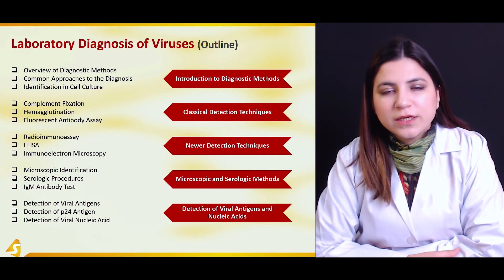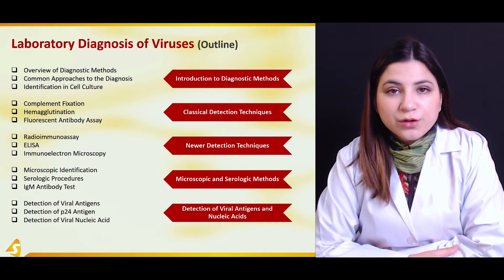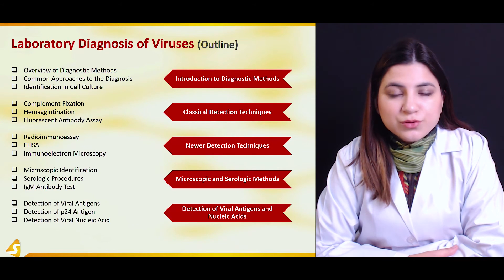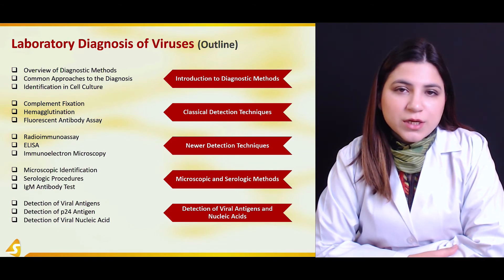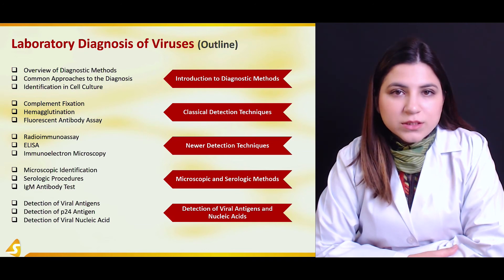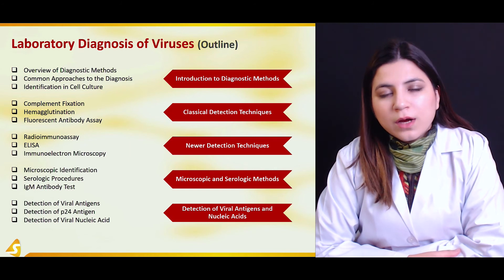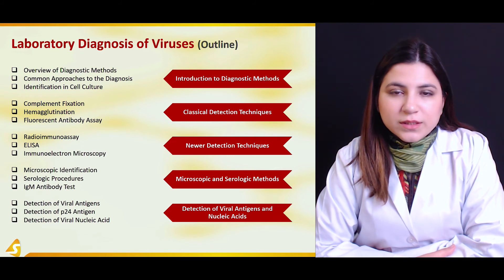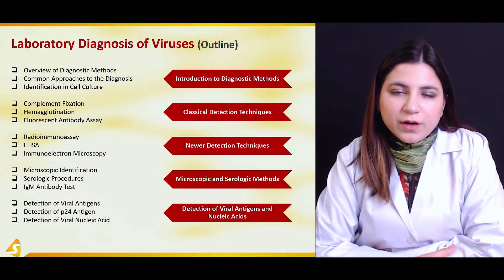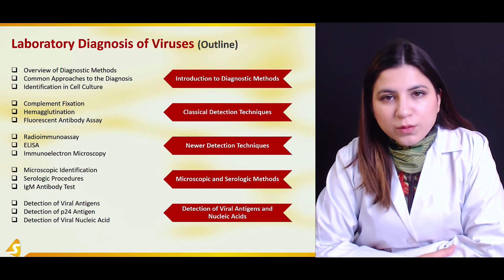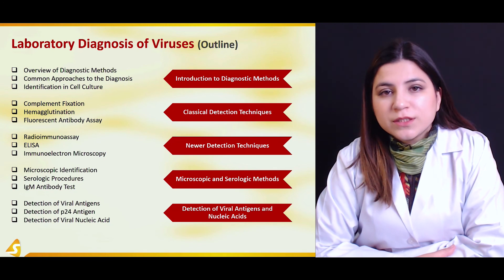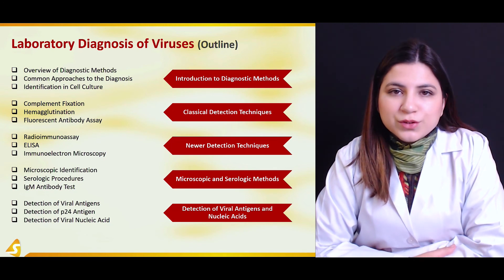Then we'll finally discuss the detection of viral antigens and nucleic acids. There are certain tests developed that are very specific to the type of viral antigen which might be present inside a cell, so we can directly detect that virus. A particular viral antigen or viral nucleic acid can be detected inside the cell. We focus specifically on the double-stranded structure of a viral nucleic acid or the viral RNA, and tests have been developed that can identify these and differentiate them from the cellular nucleic acid in order to diagnose a type of viral infection.